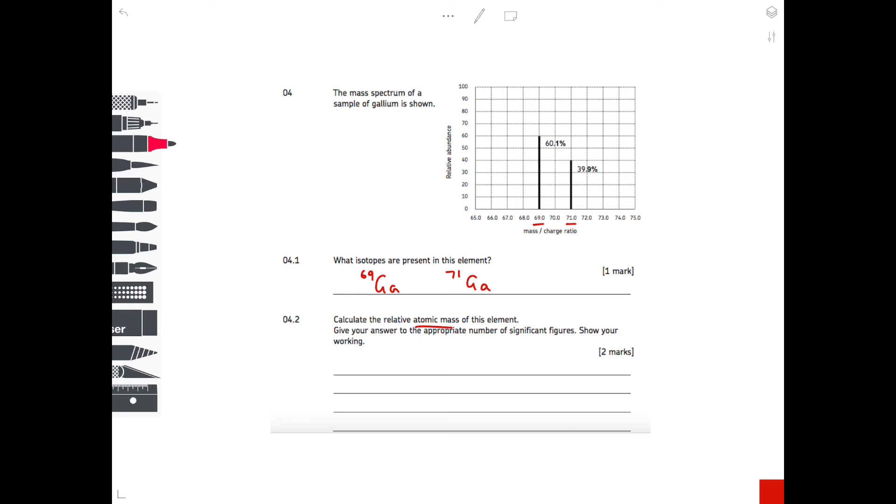Calculate the relative atomic mass of this element, and then give your answer to an appropriate number of significant figures and make sure you show your working. So this is straightforward. You simply need to multiply the percentage of each isotope by its mass. So we're timesing that by 71, and then divide it by the total, which should be 100—but double check that it is. It is in this case. And once you've done that, you get an answer which is 69.8. And I'm going to do that to three significant figures.